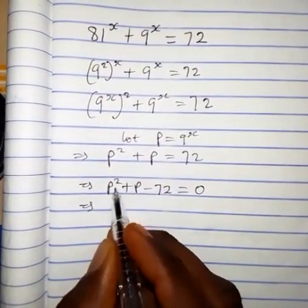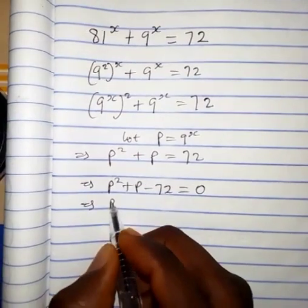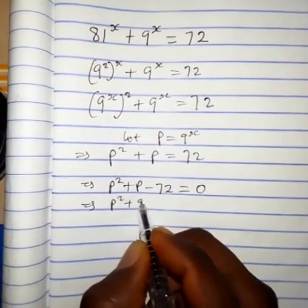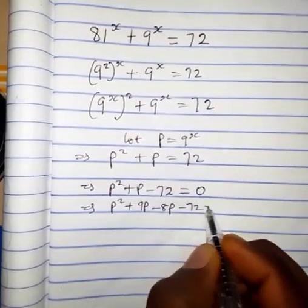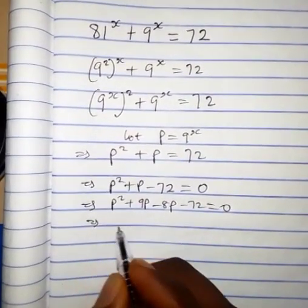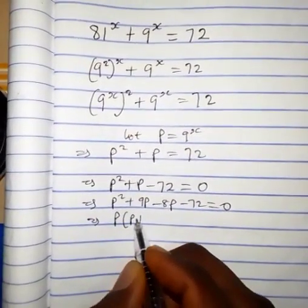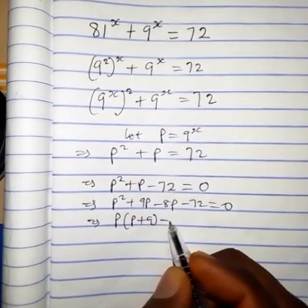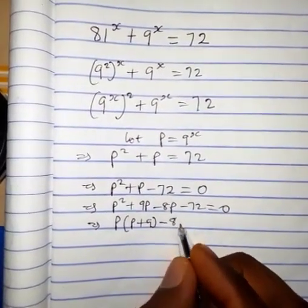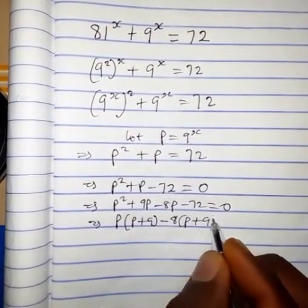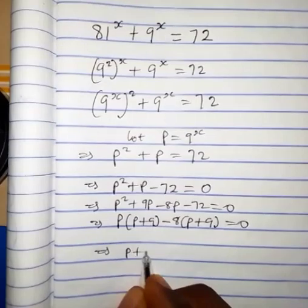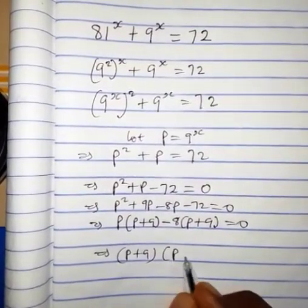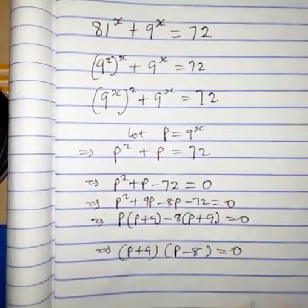When we factorize this, we have p squared plus 9p minus 8p minus 72 equals 0, which gives us p times p plus 9 minus 8 times p plus 9 equals 0. This factors as p plus 9 times p minus 8 equals 0.